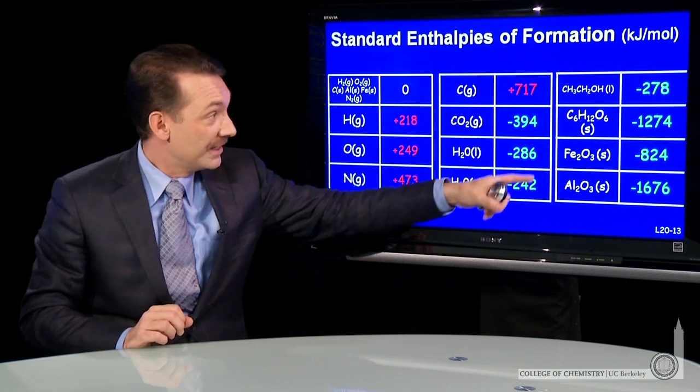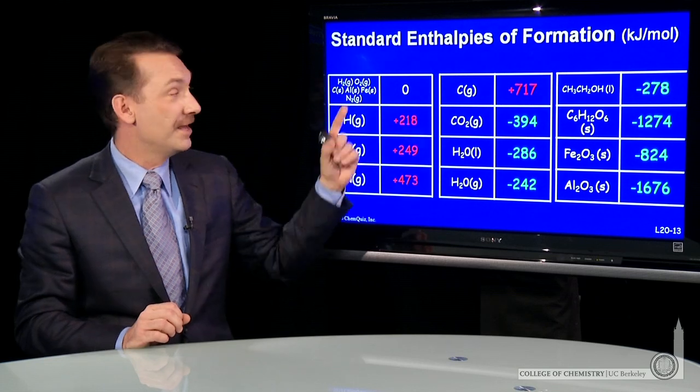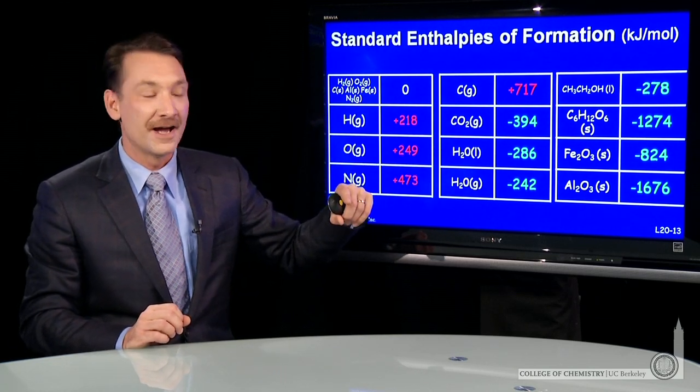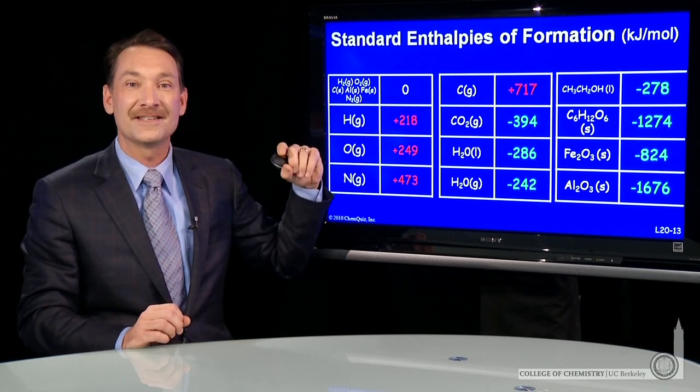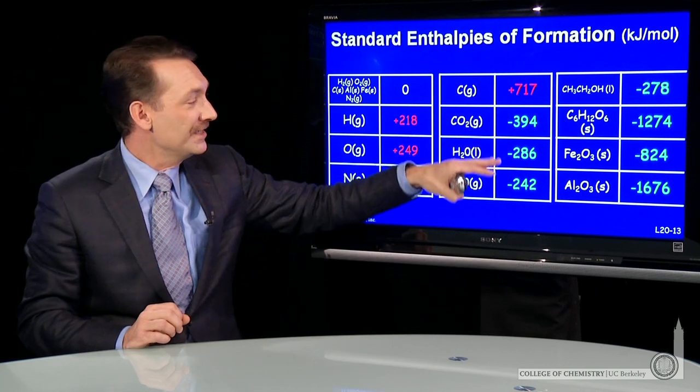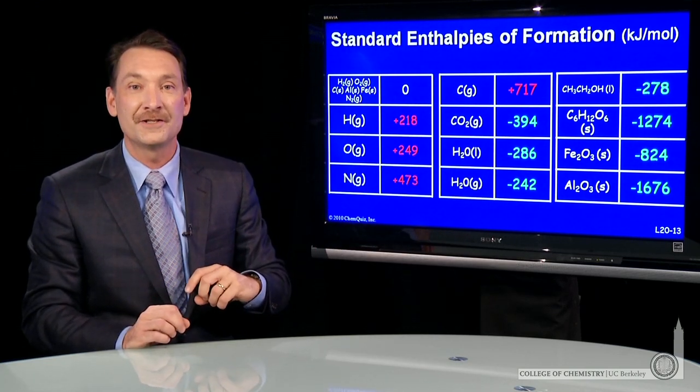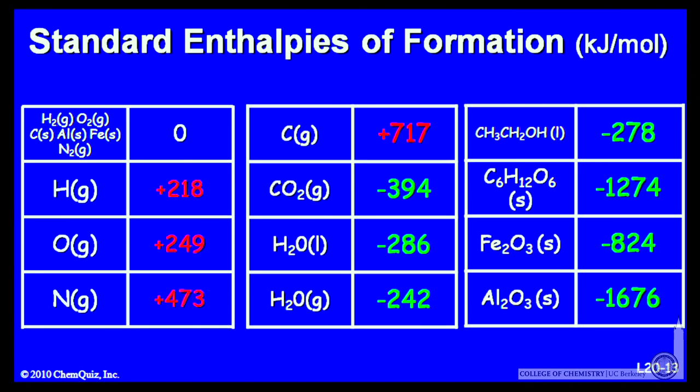Carbon dioxide and these other compounds are lower in energy than the elements in their standard state. So when you form carbon dioxide from carbon solid in its standard state and oxygen gas in its standard state, you go down enthalpy hill. So these compounds are enthalpically more stable than the elements in their standard state. And for that reason, many of them are more common—enthalpically more stable, lower on the energy scale, and they may be more common.